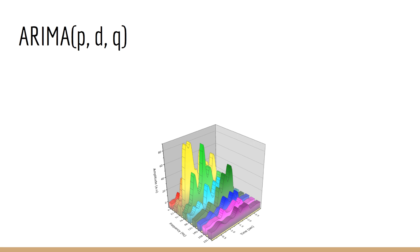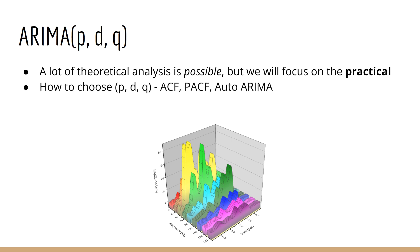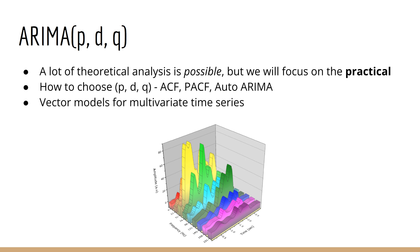The second classical method we will discuss is called ARIMA. This kind of model more closely resembles what you would see in machine learning. Although a lot of theoretical analysis is possible, this course focuses on the practical aspects — for example, how to choose the ARIMA orders P, D, and Q. We'll learn about tools such as the ACF, PACF, and auto ARIMA to help with this. We'll also look at vector models to see whether interactions between multiple variables can help us predict the future.